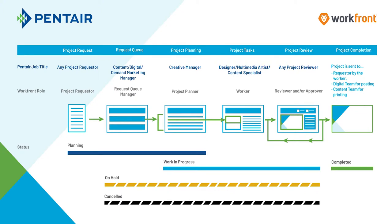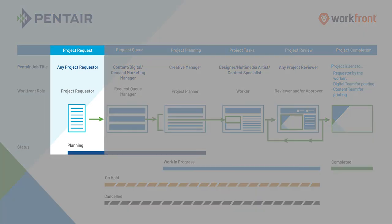There are five different steps in the process of a Workfront project. The first step is for someone to submit a project — this is the project requester. Sometimes this is somebody from marketing, sometimes it's a product manager, and sometimes it's someone from operations or another part of the business.